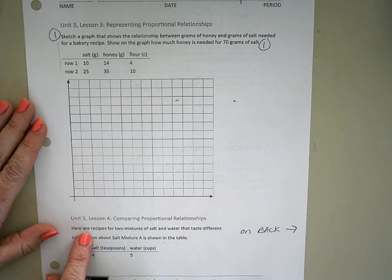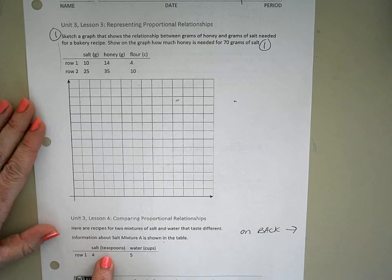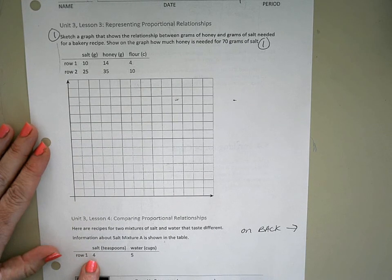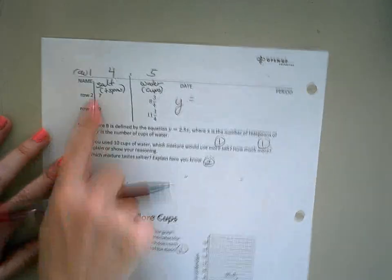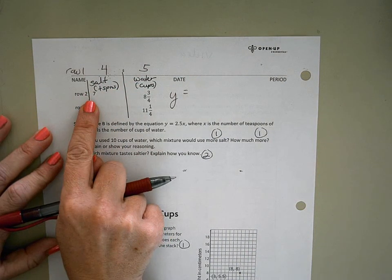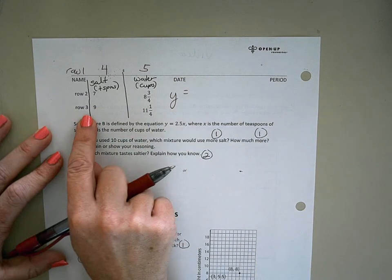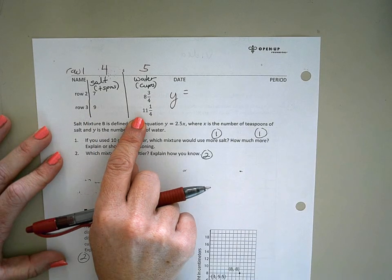Here are recipes for two different mixtures of salt and water. Here is salt mixture A. The information starts in the front, finishes in the back, so I'm sorry for that. For four teaspoons of salt, we have five cups of water. So I put that up here. For seven teaspoons of salt, we have eight and three-fourths cups of water. And for nine teaspoons of salt, we have 11 and one-fourth cups of water.